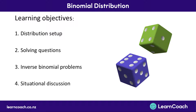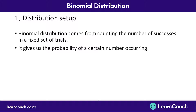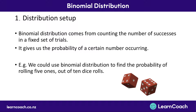Let's get started with the distribution setup. A binomial distribution is a probability distribution that comes from counting the number of successes in a fixed set of trials. It gives us the probability of a certain number of successes occurring in those trials. For example, we could use a binomial distribution to find the probability of rolling five ones out of ten dice rolls. Here, there would be ten trials because each trial is a dice roll, and a success would be rolling a one. The distribution gives us the probability of getting those five successes.